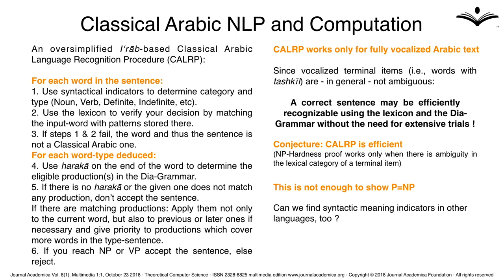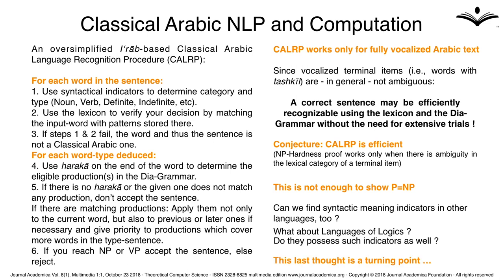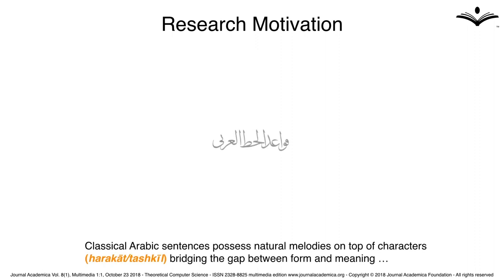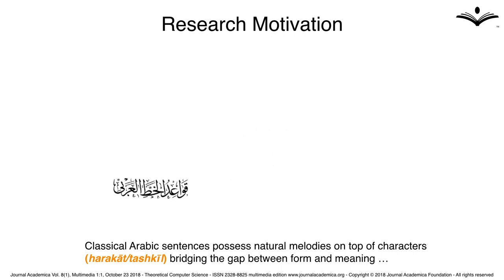Is it maybe possible to find syntactic meaning indicators in other languages too — maybe English? This sounds like a very crazy idea, but not as crazy as searching for meaning indicators in languages of logics. So I asked myself: do languages of logics possess such indicators bridging the gap between form and meaning? Classical Arabic sentences possess natural melodies on top of each character called harakat or tashkil, bridging the gap between form and meaning. Can I maybe find similar melodies in logical formulas?